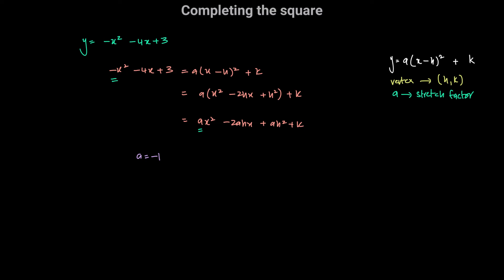Next we compare the coefficients of the x terms. We have negative 4 equals negative 2ah. Since a equals negative 1, we get negative 4 equals negative 2 times negative 1 times h, which simplifies to 2h equals negative 4. Dividing both sides by 2, h is equal to negative 2.